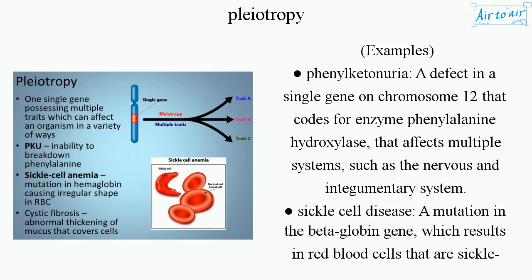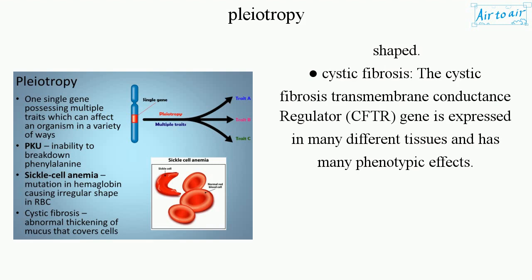Sickle cell disease: a mutation in the beta-globin gene, which results in red blood cells that are sickle-shaped. Cystic fibrosis: the cystic fibrosis transmembrane conductance regulator (CFTR) gene is expressed in many different tissues and has many phenotypic effects.